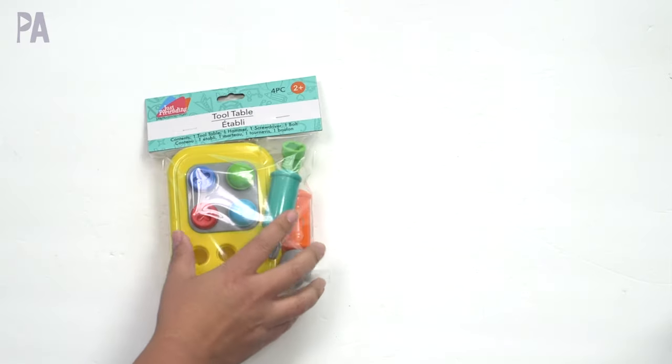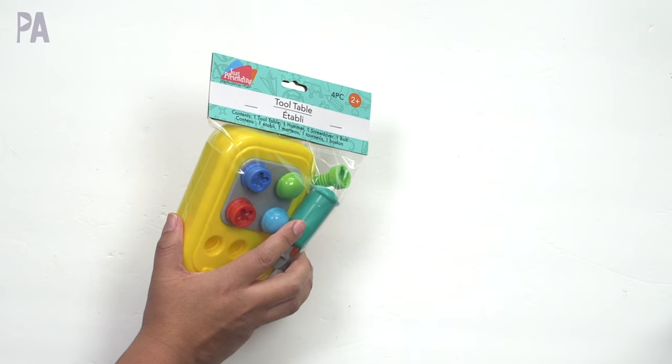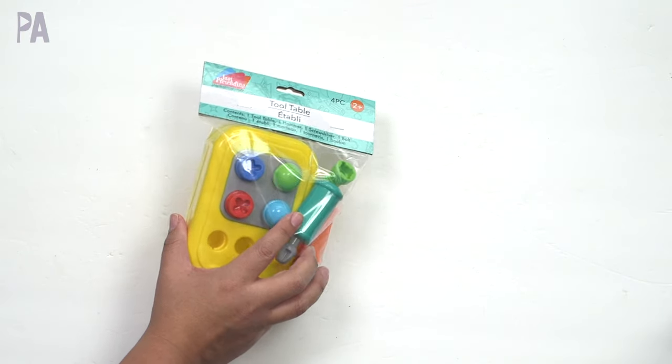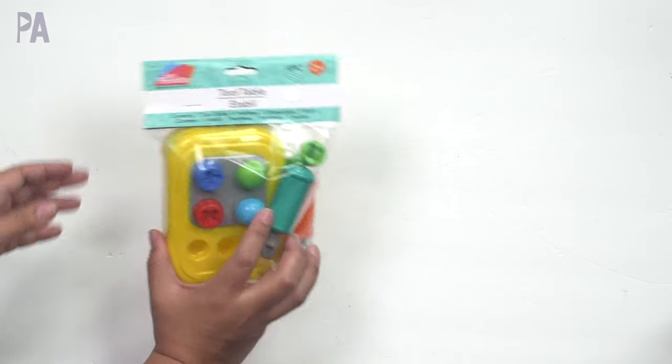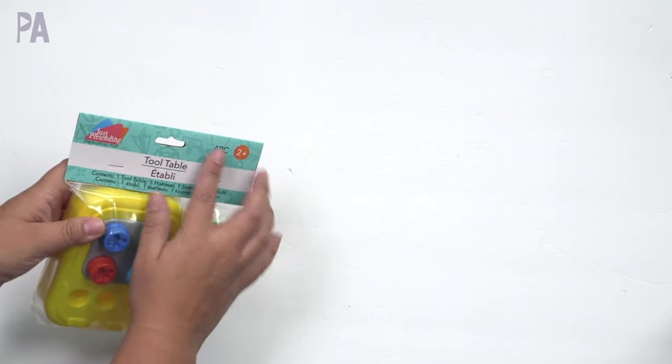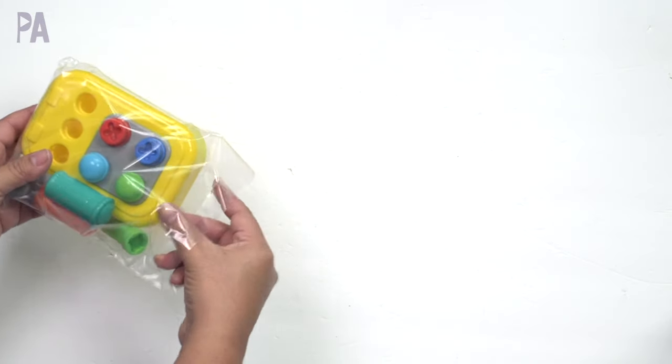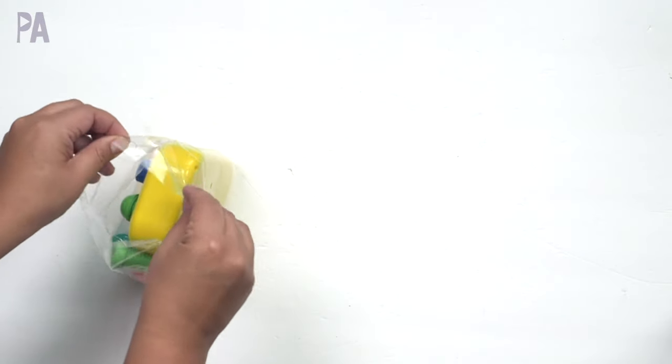So many new things to try. This one definitely caught my eye. Somebody sent this to me, a picture on Instagram, and when I found it, I just thought I need to try and see how it works. So this is the tool table. This is for ages two and up. There's four pieces in here. Be careful when you open this packaging because there are some staples on the pack.